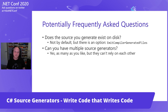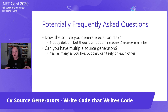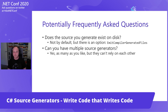Can you have multiple source generators? Absolutely — you can have as many as you like. One big design consideration is that source generators can't rely on each other. You can't have one source generator that generates a bunch of classes and then expect another source generator to pick up those classes and do something with them. Each one is independent and they all contribute back to the main project, but they don't see each other's work.